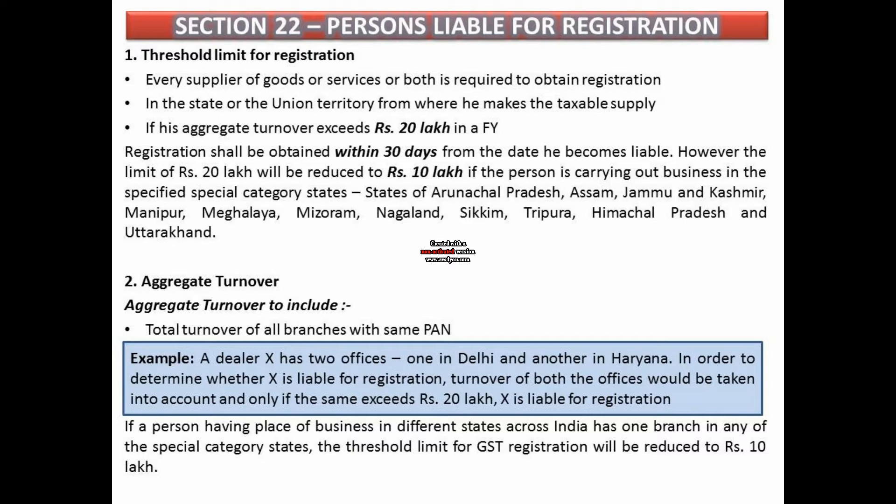Aggregate Turnover includes the turnover of all branches with the same PAN across all of India. All branches of a person — wherever located — are included in aggregate turnover. For example, if X has two offices, one in Delhi and one in Haryana, then the turnover of both offices will be checked for the purpose of registration.